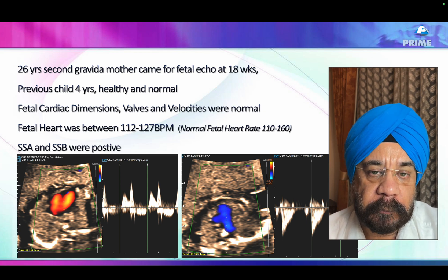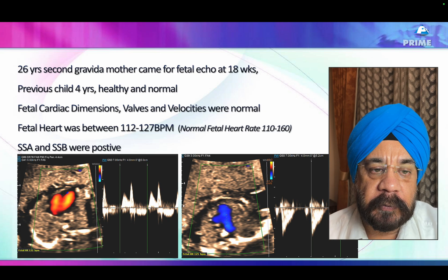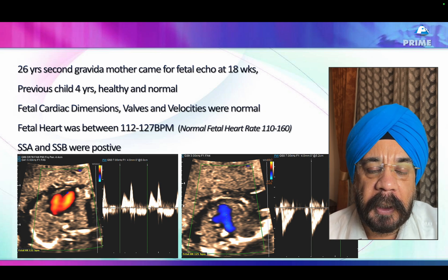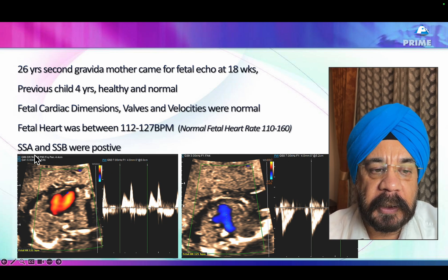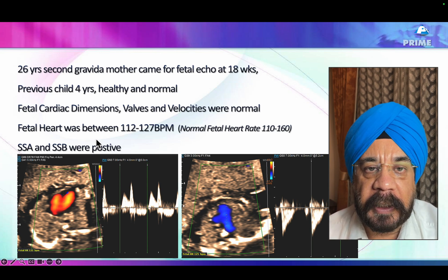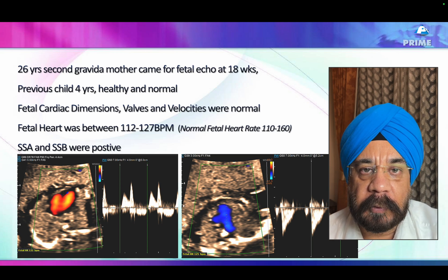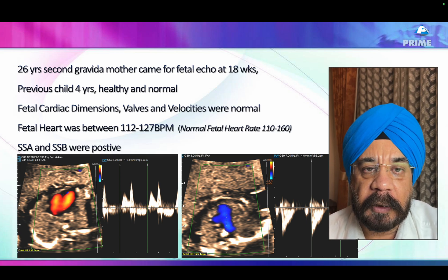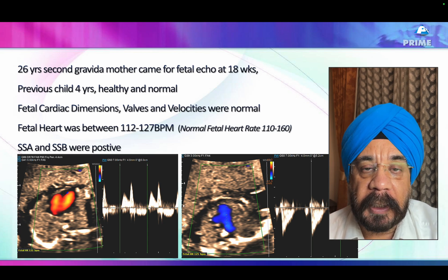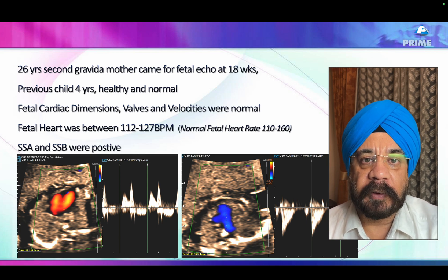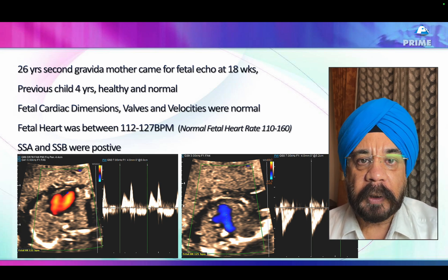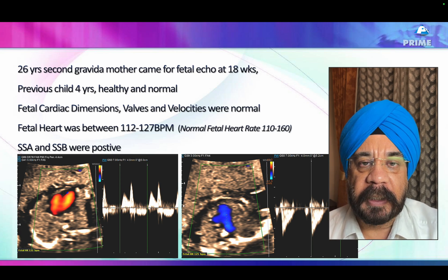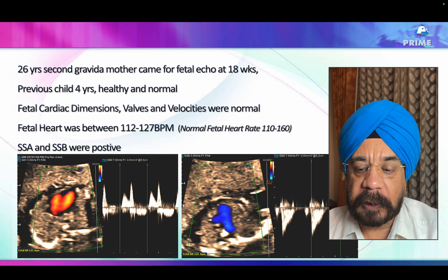A second gravida mother came for a fetal echo at 18 weeks. She had a previous normal child, and now presented with sinus bradycardia. When we tested anti-RO and anti-LA antibodies, they were positive. The key message is that anti-RO and anti-LA antibodies don't only produce a complete heart block or AV block — they can also cause sinus bradycardia. So we must rule out SLE-like disorders in any patient with sinus bradycardia.